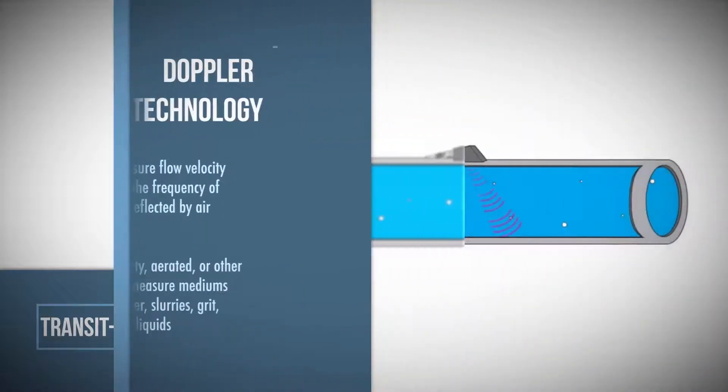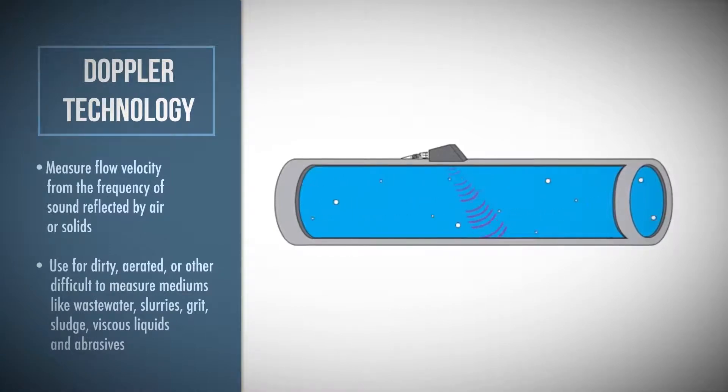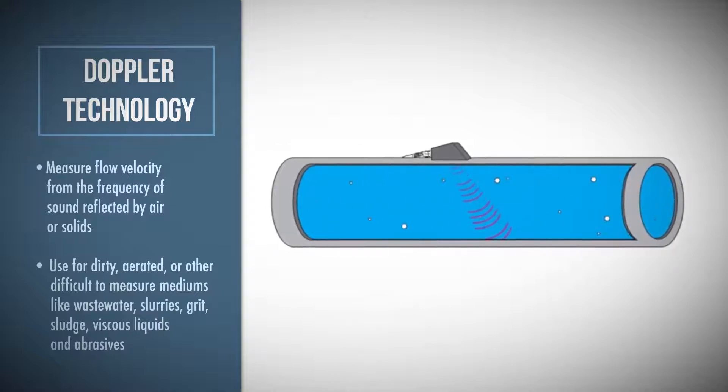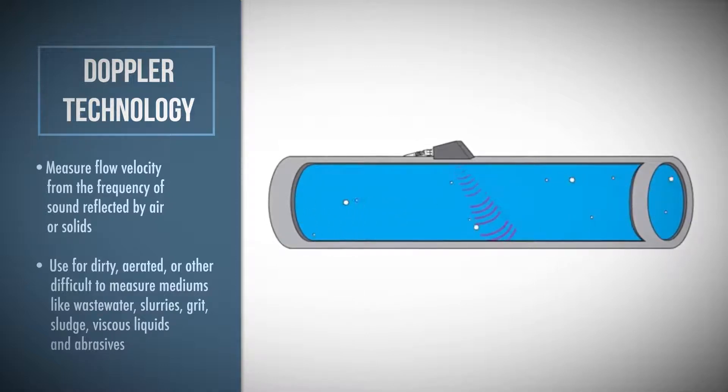Doppler technology calculates velocity by measuring the change in frequency as ultrasonic sound waves are reflected off entrapped air or solids in the pipe. Use Doppler flow meters for dirty, aerated, or other difficult to measure mediums like wastewater, slurries, grits, sludge, viscous liquids, and abrasives.